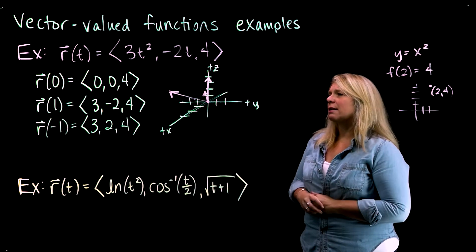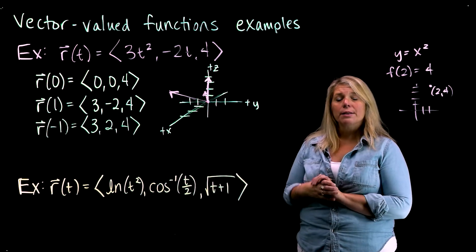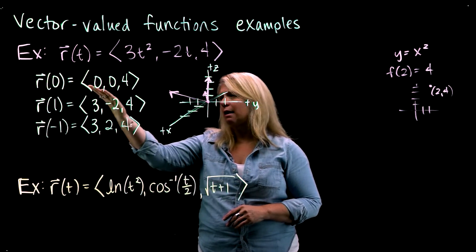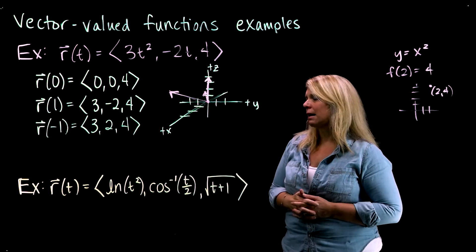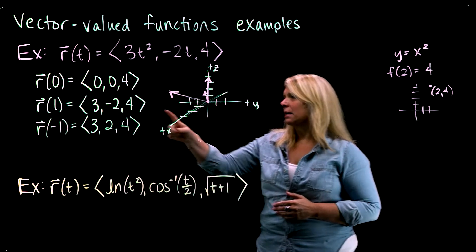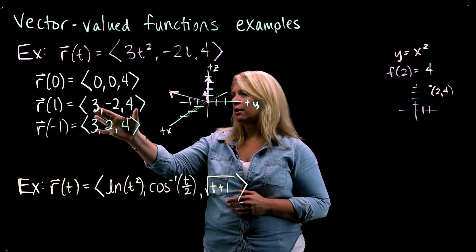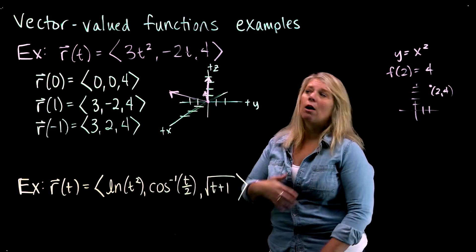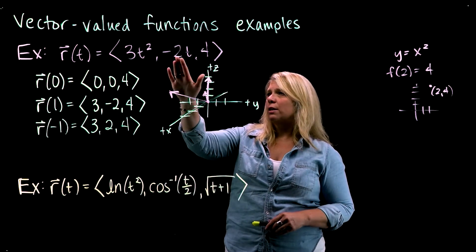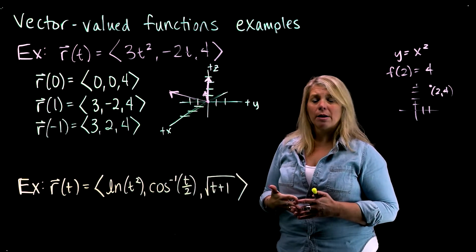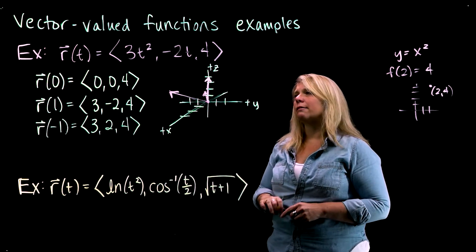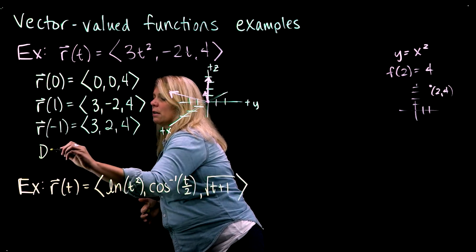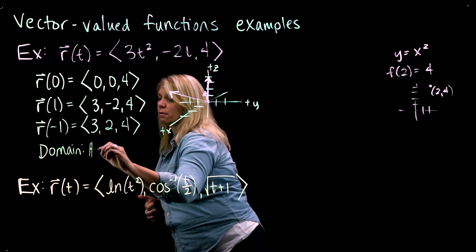Another relevant thing to think about with any vector-valued function is its domain. I've plugged in some values, and each t value got one output vector paired to it. These numbers are all part of my domain, and these vectors are all part of my range. When we talk about the domain overall, we want to think about all possible inputs. Looking at those component functions, there are no restrictions, so for this first function the domain is all real numbers.